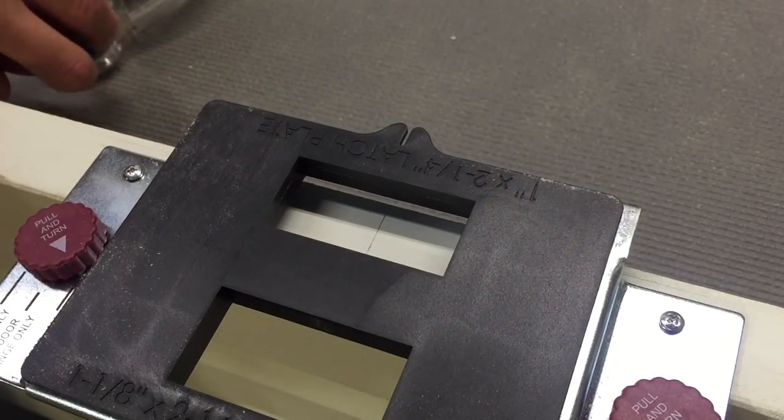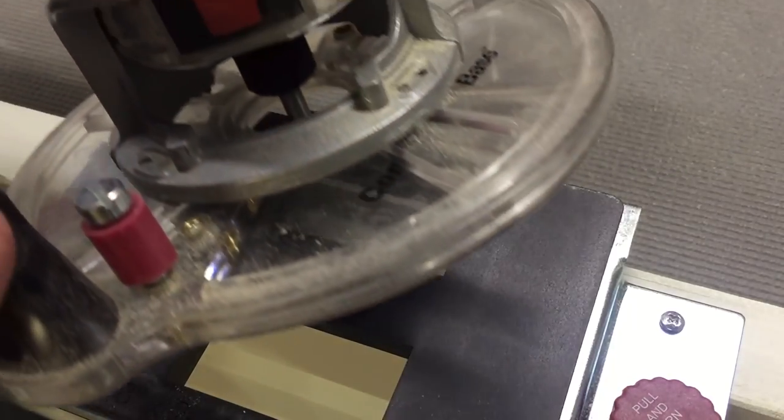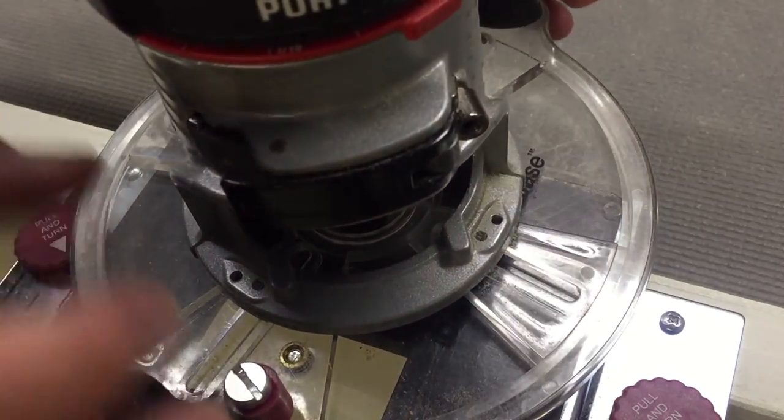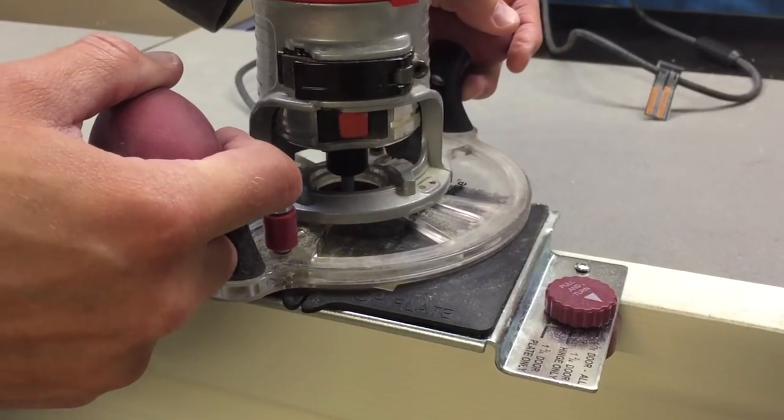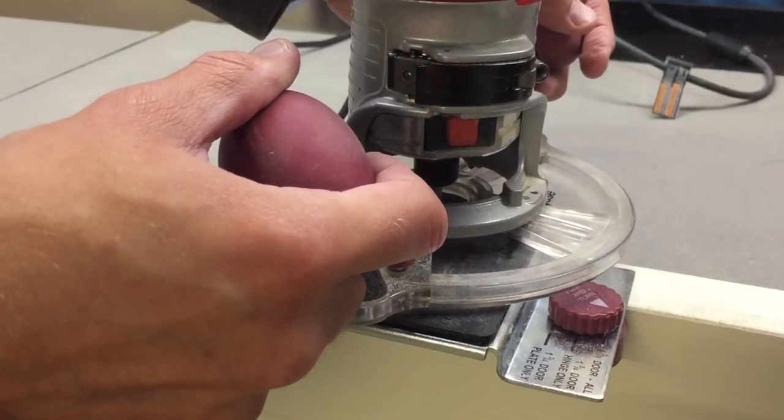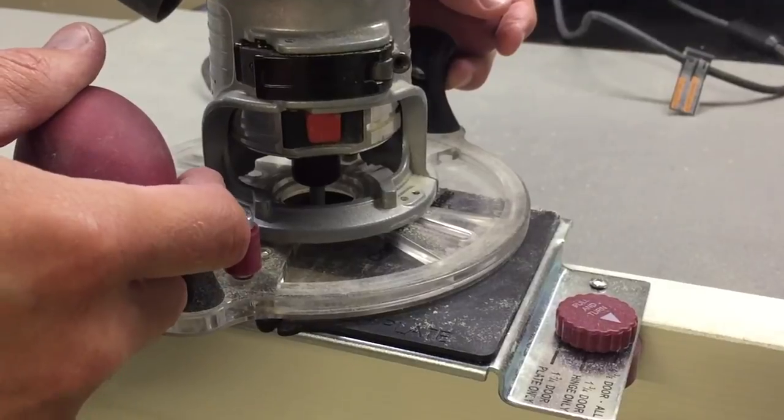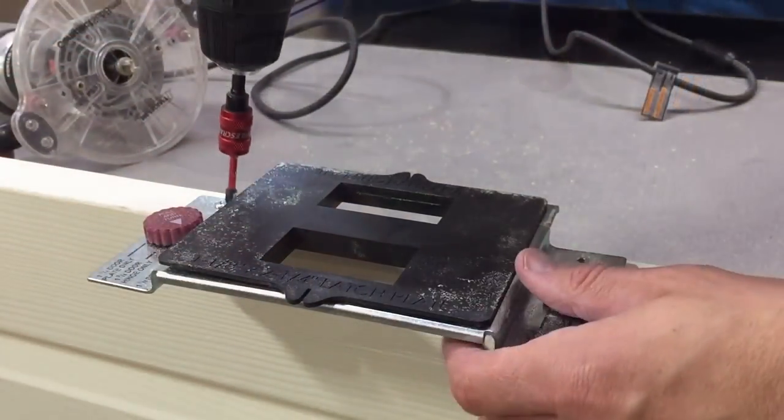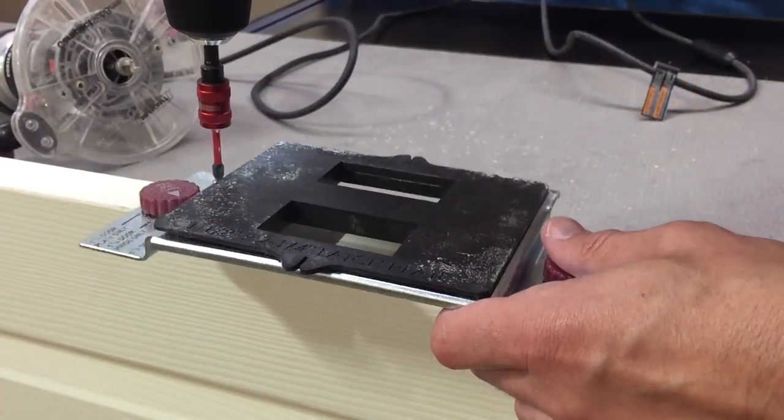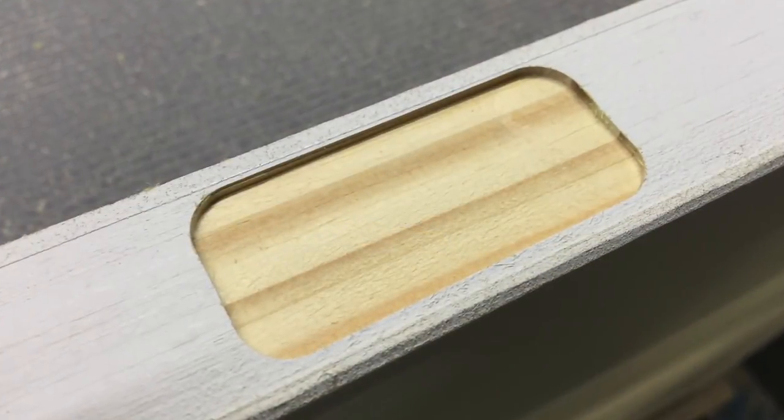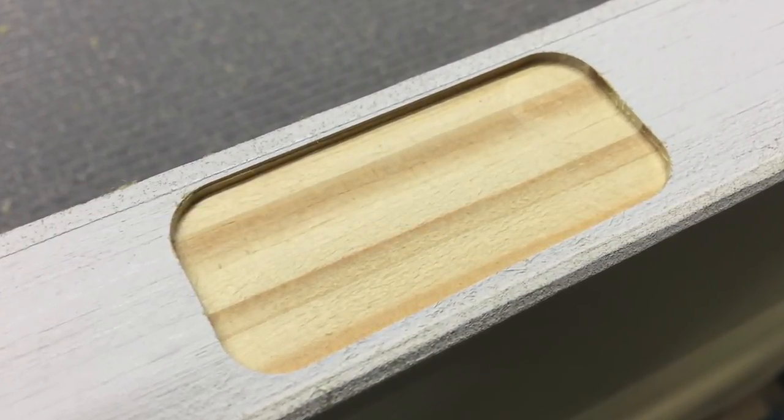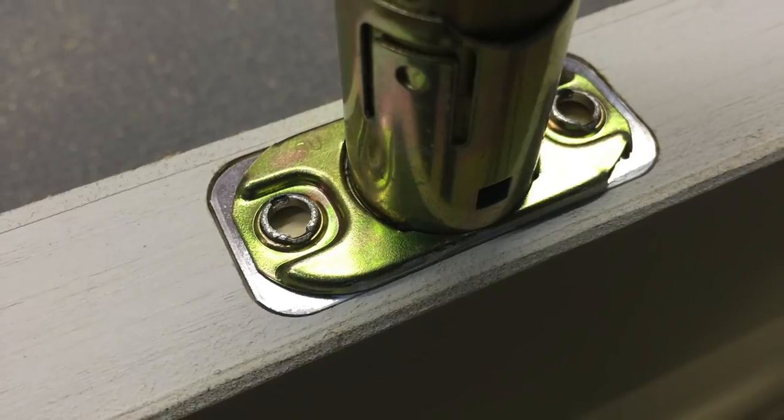The process for strike plates and latch plates is the same as the hinges. Mark your locations and line up the template. Screw it into location and route the mortises. Be sure to verify the proper mortise depth on a scrap piece of wood before cutting the door or the jamb. Miles Craft offers templates for two standard sizes of strike plates and three standard sizes of latch plates, so be sure you are using the correct template before routing.